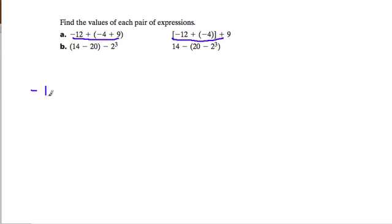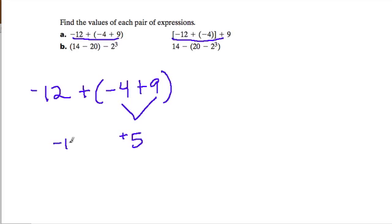The first part of the expression says negative 12 plus negative 4 plus 9. Following the order of operations, you want to deal with the parentheses first. If I add these two, I get positive 5. Then I want to add that to negative 12, so negative 12 plus 5, or plus positive 5. That's going to bring me to negative 7, because it's moving up the number line from negative 12. In that case we get negative 7.